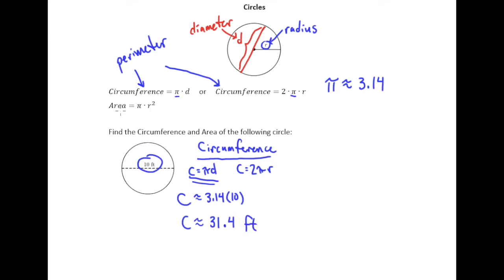All right now for the area. The area you have to compute using the radius. So the area formula is area equals pi times r squared.